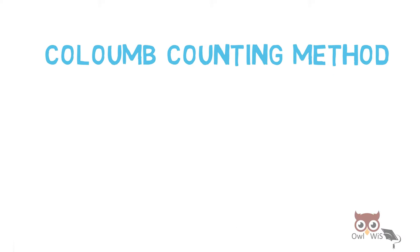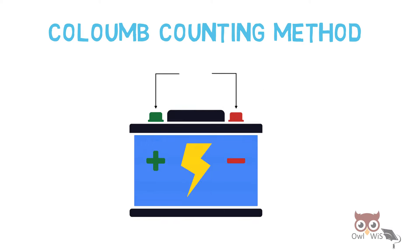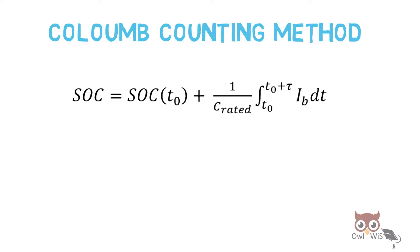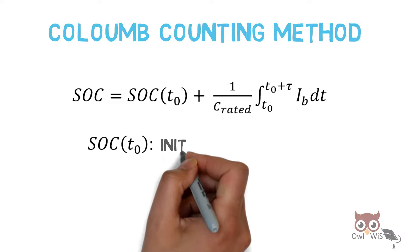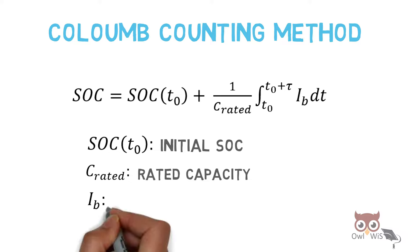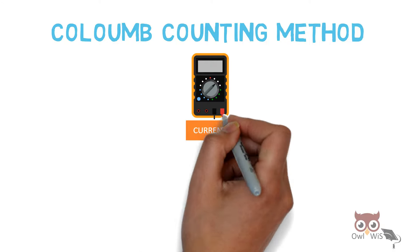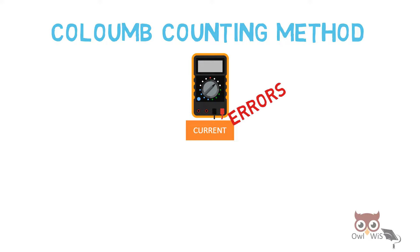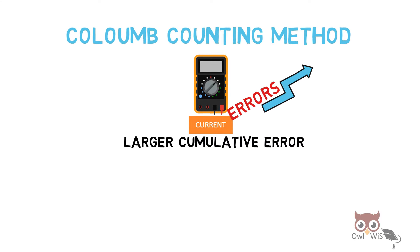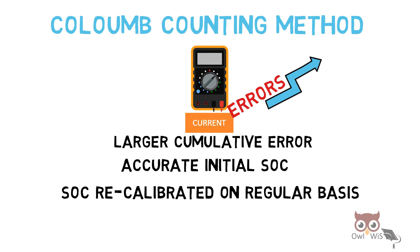Next is the Coulomb counting method, also known as the current integration or ampere-hour counting method. Here, the current flowing in and out of the battery is measured and then integrated over time. The formula used is: SOC(t₀) is the initial state of charge, C_rated is the rated capacity of the battery, and I_BE is the battery current integrated over time. The difficulty with this method is that if the measured current has errors, these errors accumulate over time and result in larger cumulative errors. Also, an accurate initial SOC is needed, and SOC must be recalibrated on a regular basis in order to avoid errors.